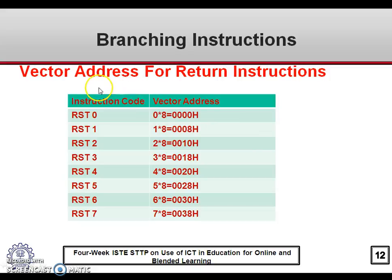The different vector addresses for restart instructions are as follows: RST0 — 0×8 = 0000H; RST1 — 1×8 = 0008H; RST2 — 2×8 = 0010H, and so on for RST3 through RST7.